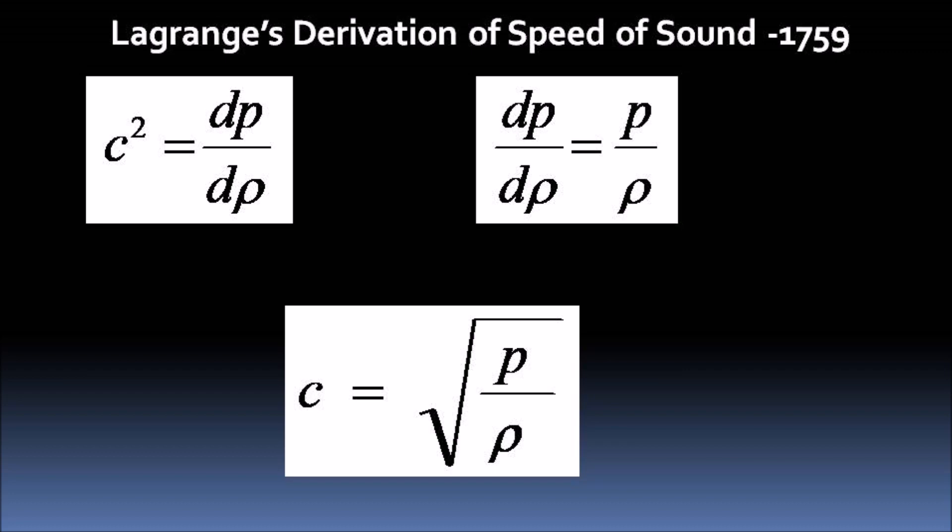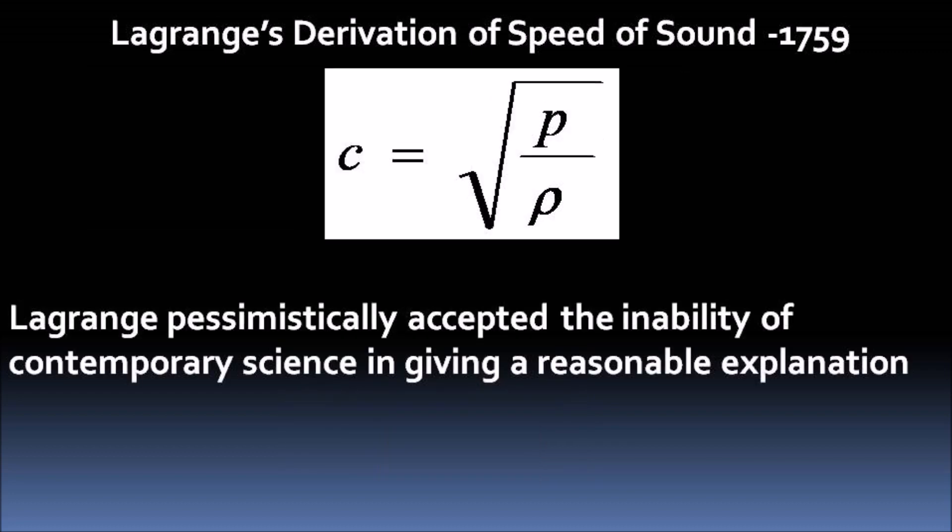After obtaining the same expression as Newton, Lagrange pessimistically accepted inability of contemporary science in giving a reasonable explanation.